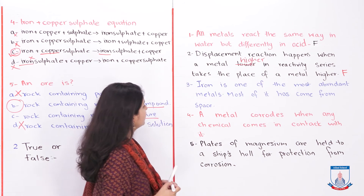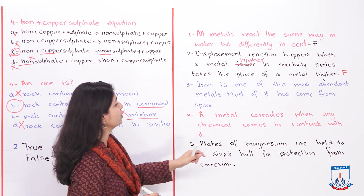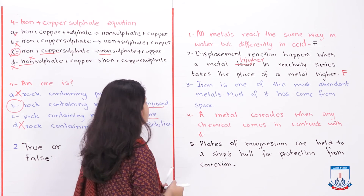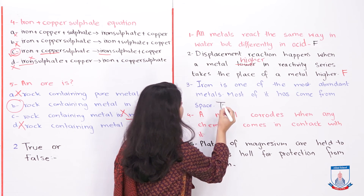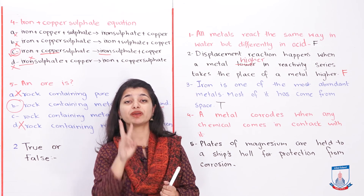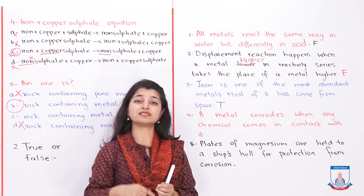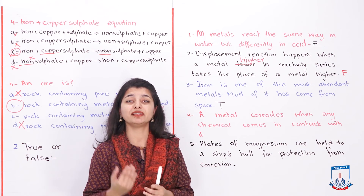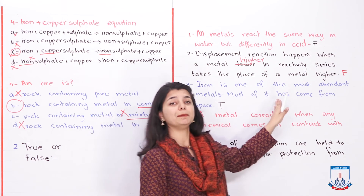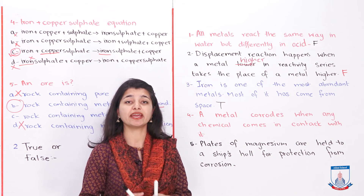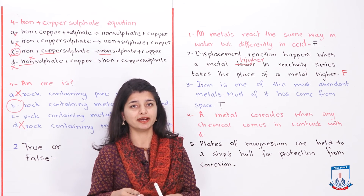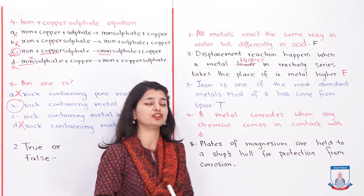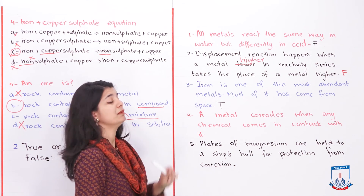Third statement: 'Iron is one of the most abundant metals and most of it has come from space.' This is true. Iron is the second most abundant metal after aluminum. Also, all metals originally came from meteorites from space that hit the Earth — we discussed this at the beginning of the chapter.